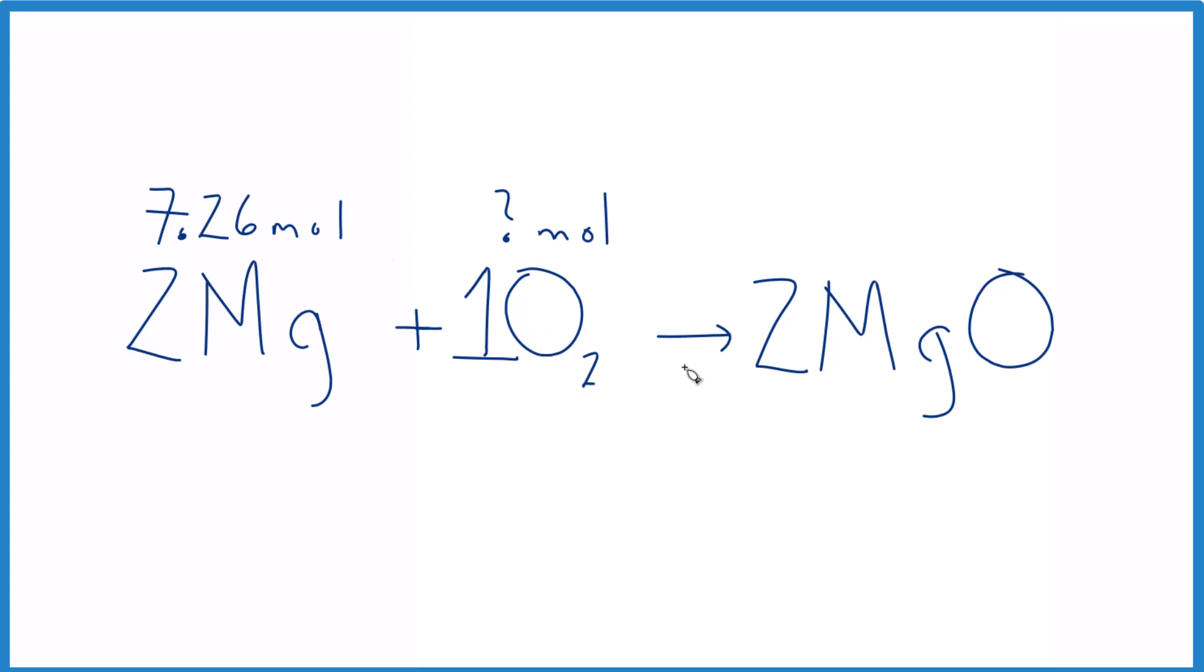So 7.26 is to 2 as X is to 1. We cross multiply: 2X equals 7.26. And we're going to divide by 2 here and by 2 here.